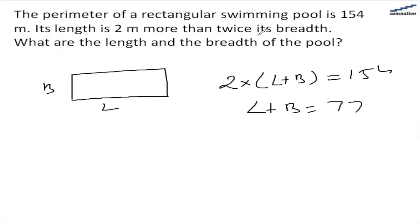Now the length is 2 meters more than twice its breadth. Length is 2 meters more than twice its breadth, so that's 2b plus 2. That is 2 meters more than twice its breadth.